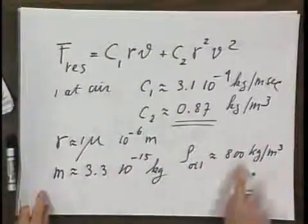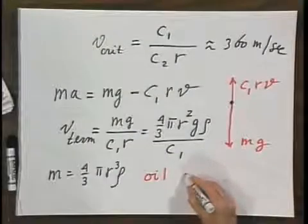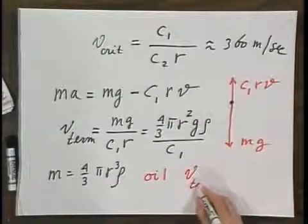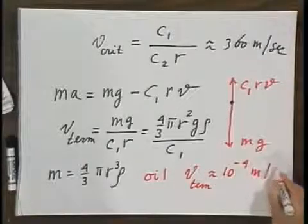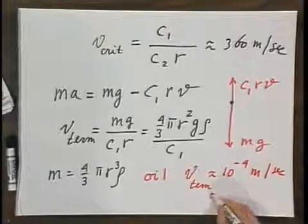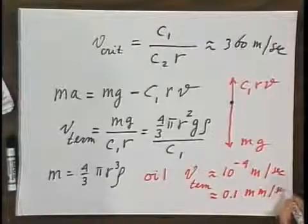this is the mass, and this is the density. I find a very low value of approximately 10⁻⁴ meters per second, which is about a tenth of a millimeter per second.